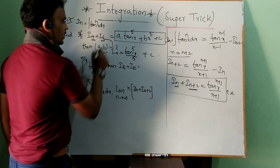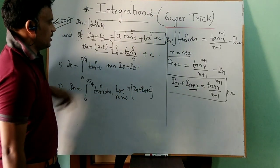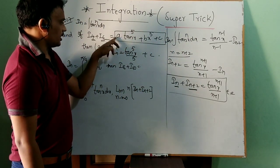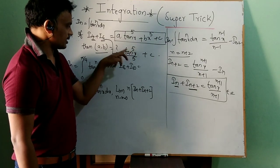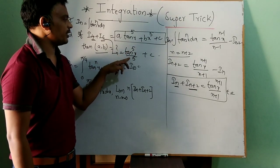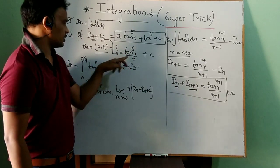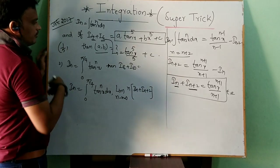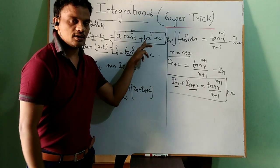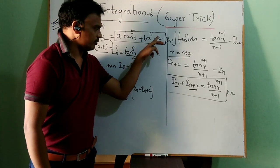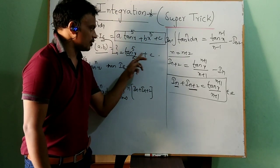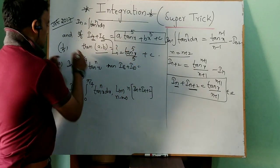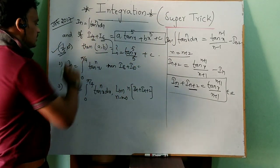They have given the form a·tan^5(x) + b·x^5 + c. Comparing, the coefficient of tan^5(x) is 1/5, so a = 1/5. For b, the coefficient of x^5: there is no x^5 term in our result, so b = 0.